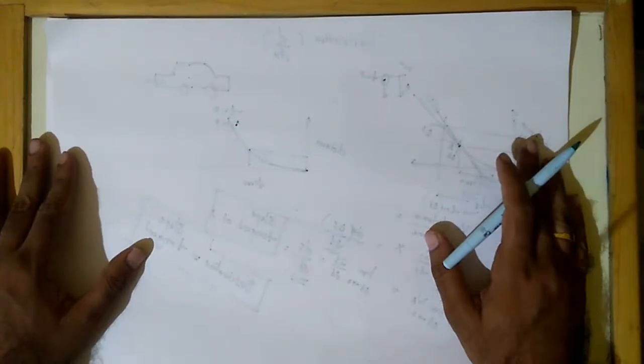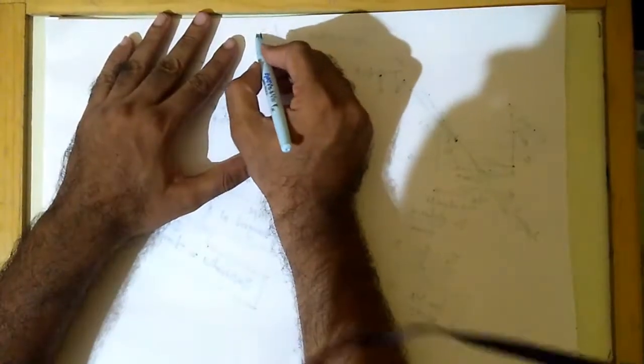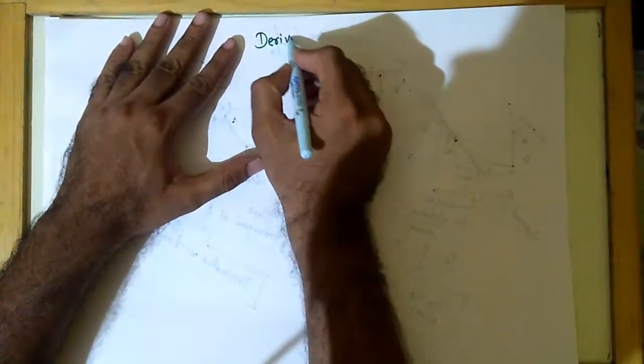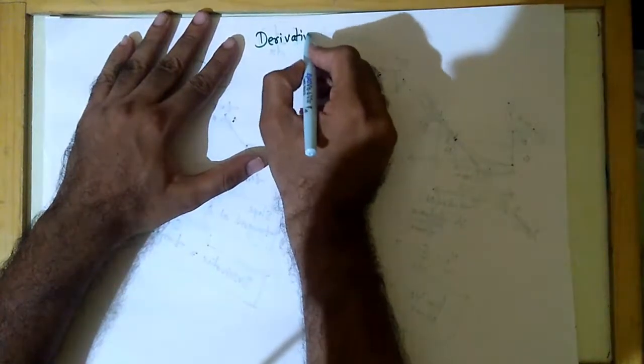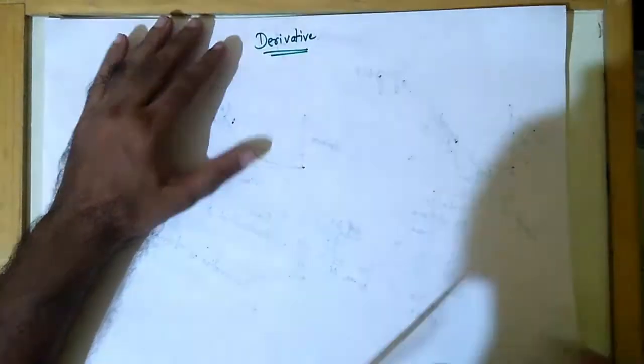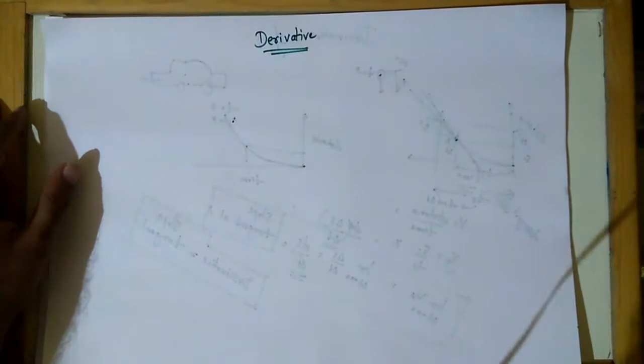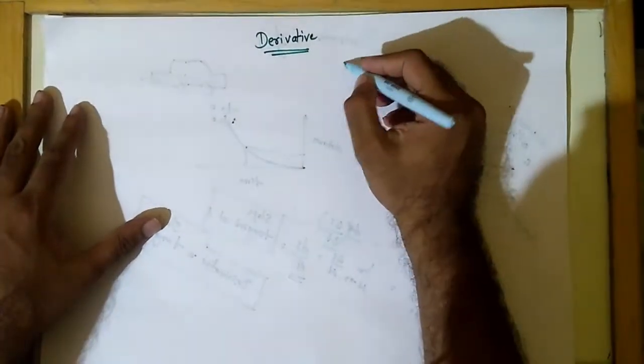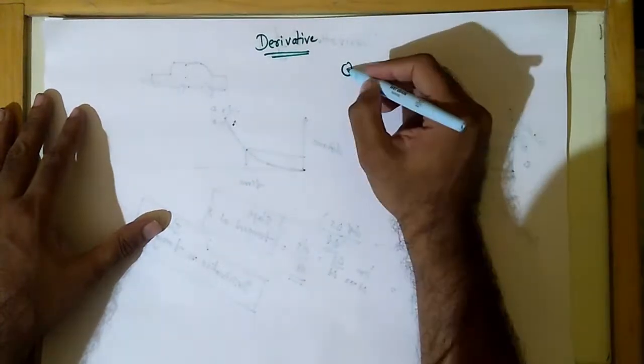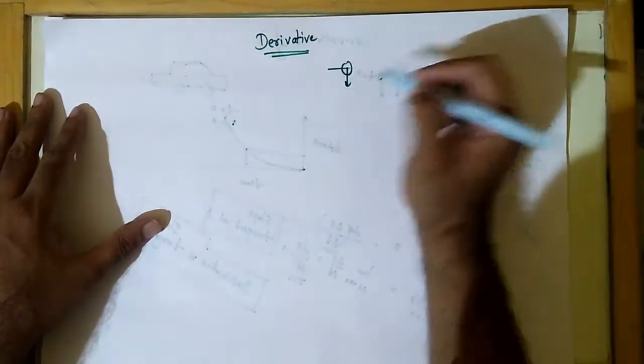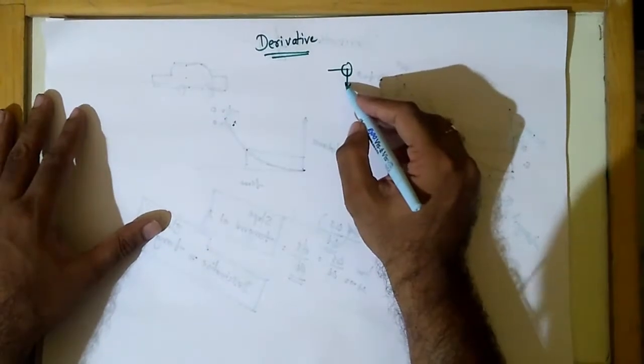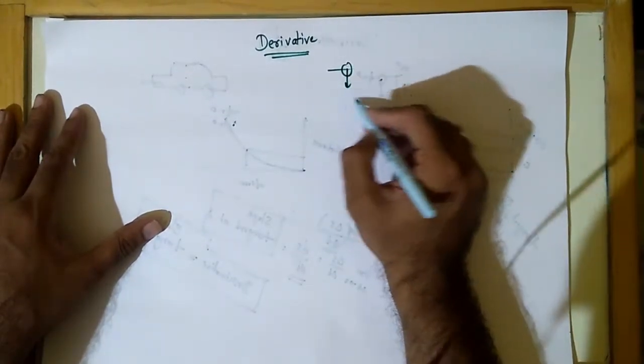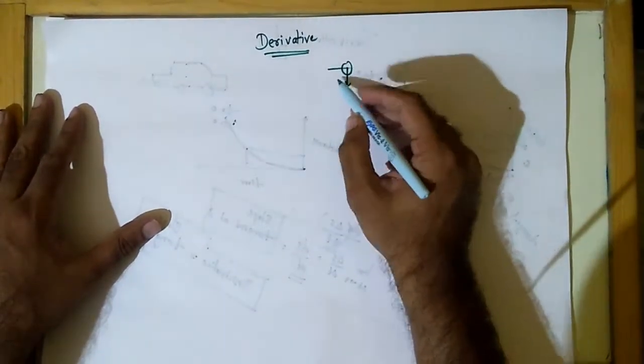Hello guys, in this video I'm going to explain what is a derivative. To understand this, let us take a simple practical problem. Suppose I have a stone in my hand and if I drop it, and at each time instant I calculate what is the displacement.